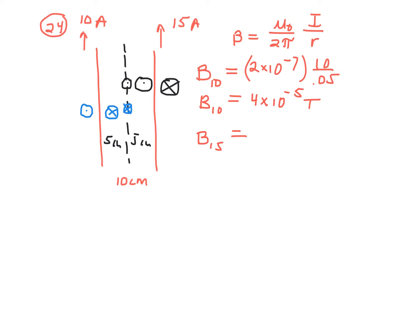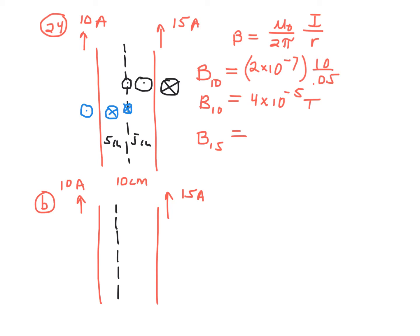In part B, we have the same two wires separated by 10 centimeters, but now we're looking for a location — and there is one — closer to the 10-amp wire where these two magnetic fields cancel out. I'll draw a line representing that location. I'm going to call that R sub 10 — the distance from the 10-amp wire — and it's less than 5 centimeters. The distance from the 15-amp wire I'll call R sub 15. I know that R sub 10 plus R sub 15 equals 10 centimeters, or 0.10 meters, so R sub 10 equals 0.10 minus R sub 15.